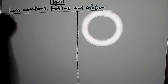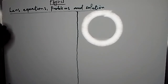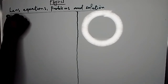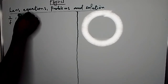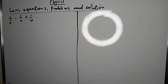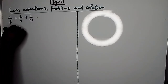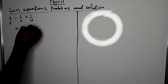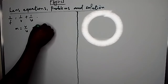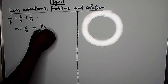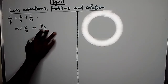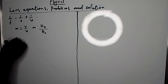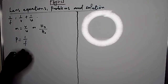The lens equation, which is otherwise known as the lens formula, is 1 over F equals 1 over V plus 1 over U. The magnification is V over U, or image height over object height. And then P is 1 over F.